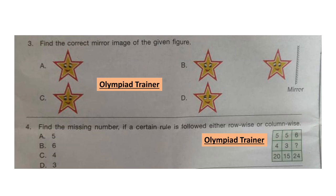Question 4: Find the missing number if a certain rule is followed either row-wise or column-wise. Look at the table and find out the rule followed. The correct answer is option C: 4. Looking column-wise, 5 × 4 = 20, 5 × 3 = 15, so 6 × 4 = 24. The answer is option C.